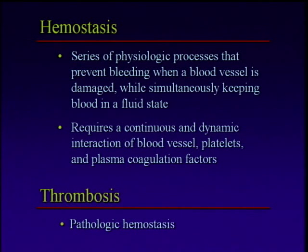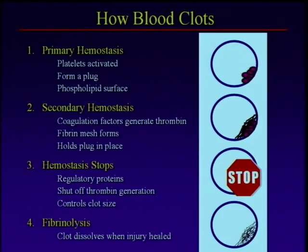And when that doesn't happen normally — when it happens excessively — we have thrombosis. This cartoon illustrates the four-step process that we think about when we think about how blood clots. So the first step is primary hemostasis, and this is really platelets coming in and plugging up the hole.